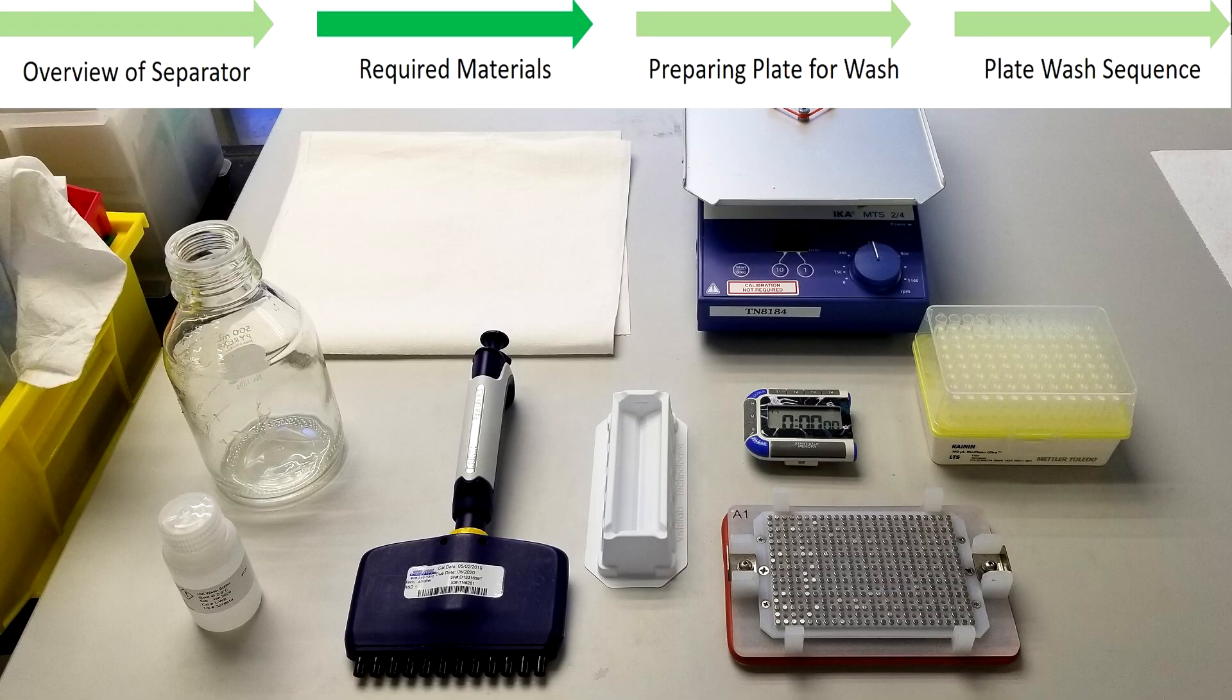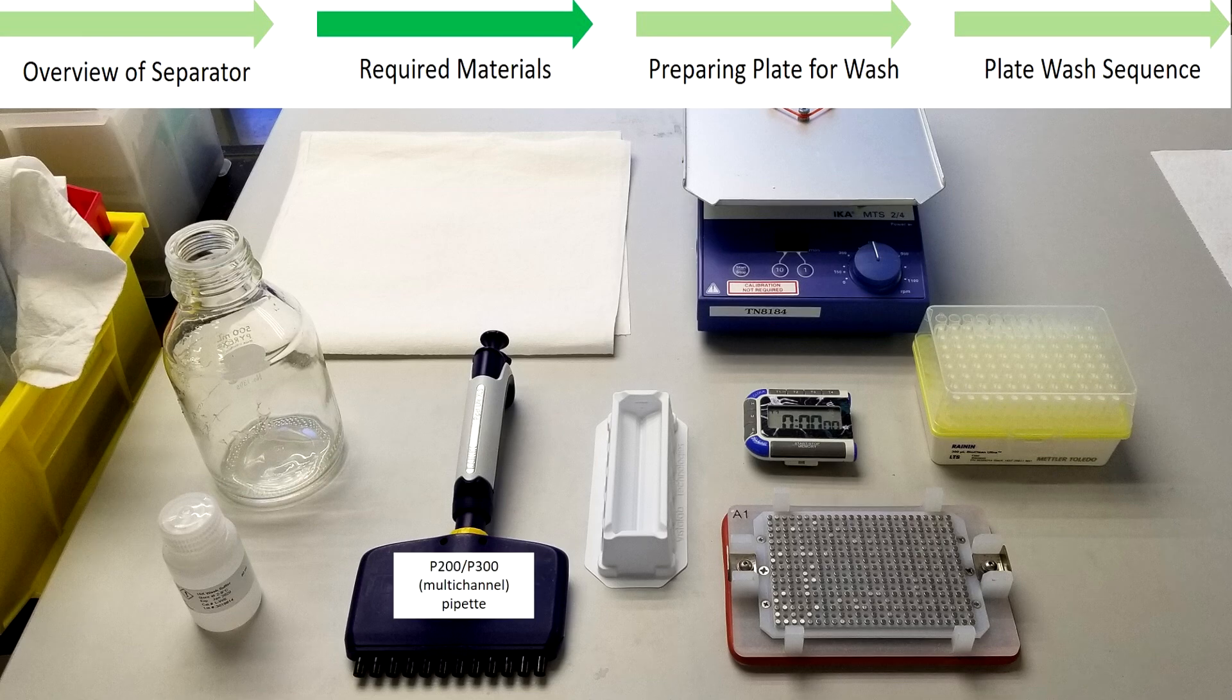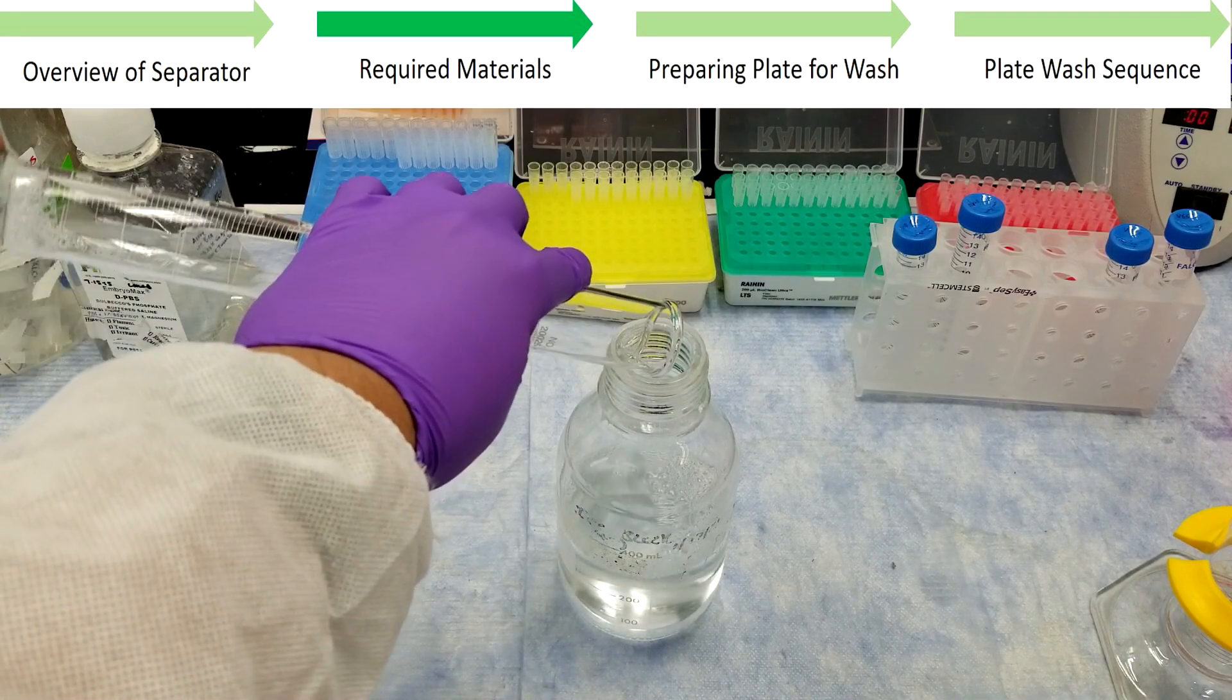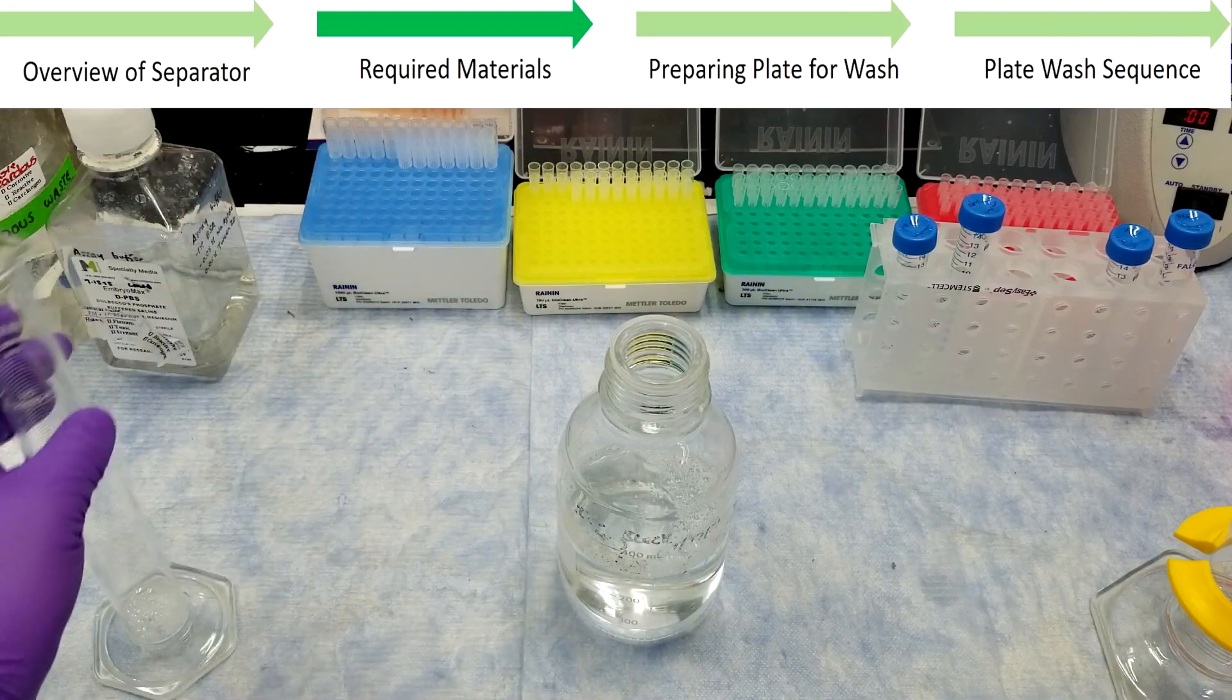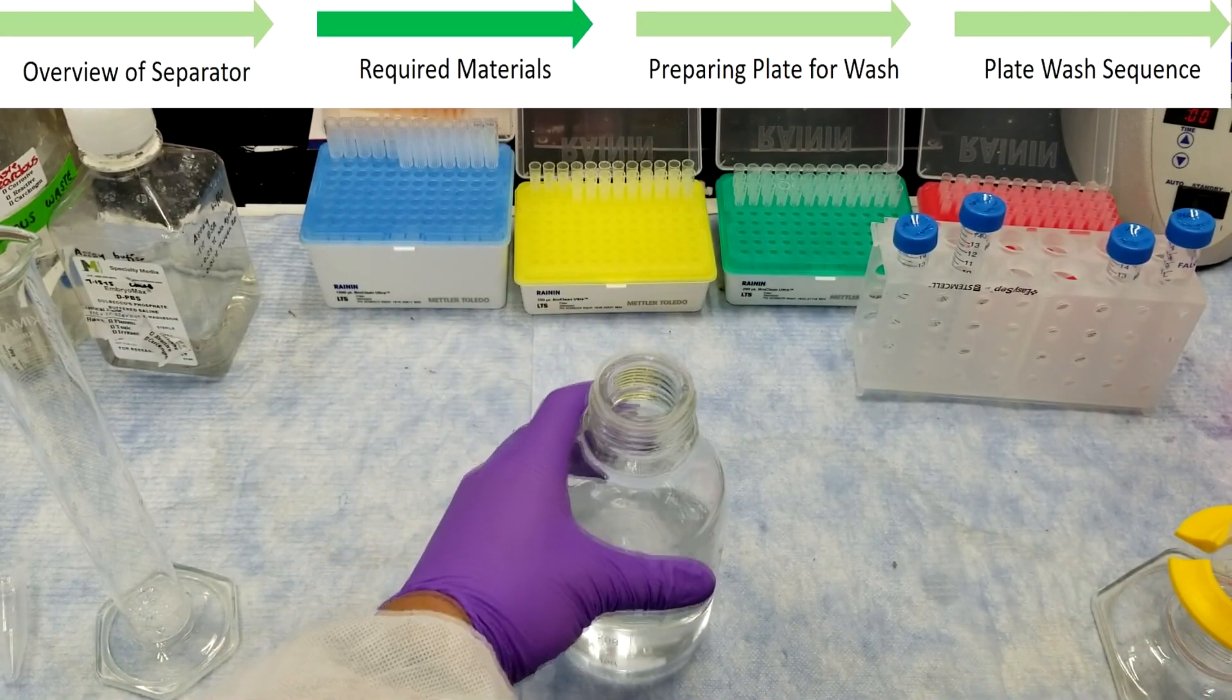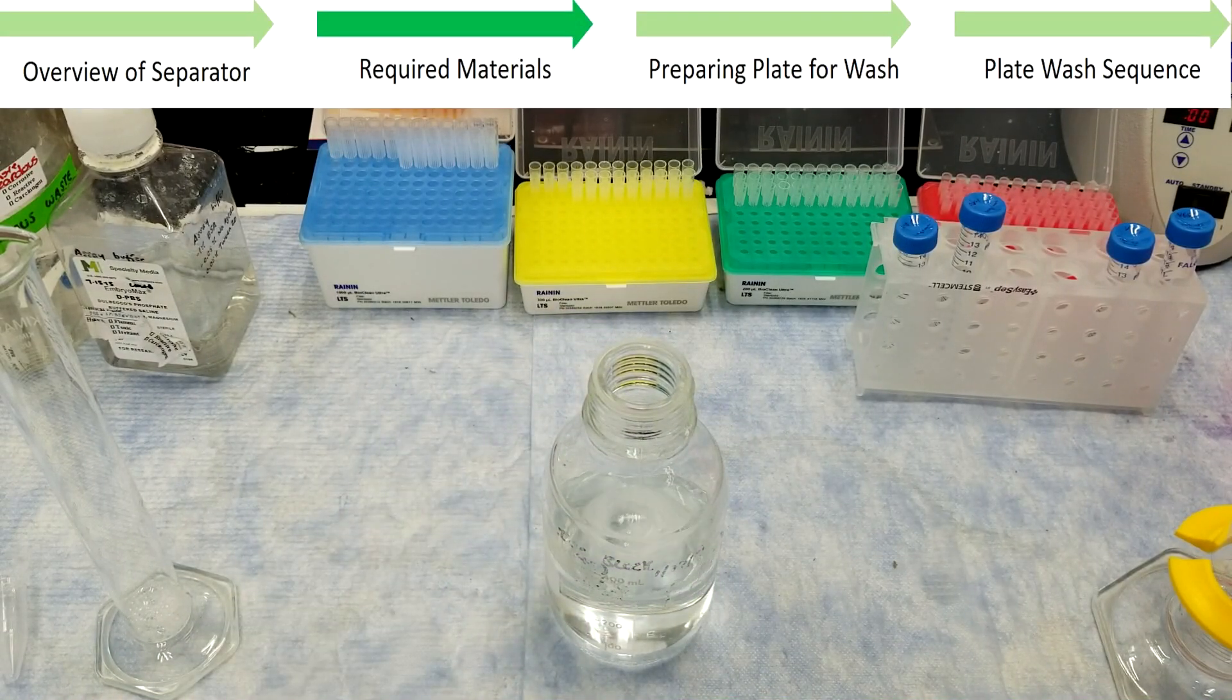Other materials you'll need to perform a MillPlex plate wash include a P200 or P300 pipette and matching tips, a clean reagent reservoir, a timer, an orbital shaker able to reach 800 RPM, clean paper towels, a clean bottle, and the 10x wash buffer included in the MillPlex kit. This 10x stock should be diluted 1 to 10 with deionized water ahead of time. 300 milliliters of 1x buffer should be sufficient for all washes associated with an assay.